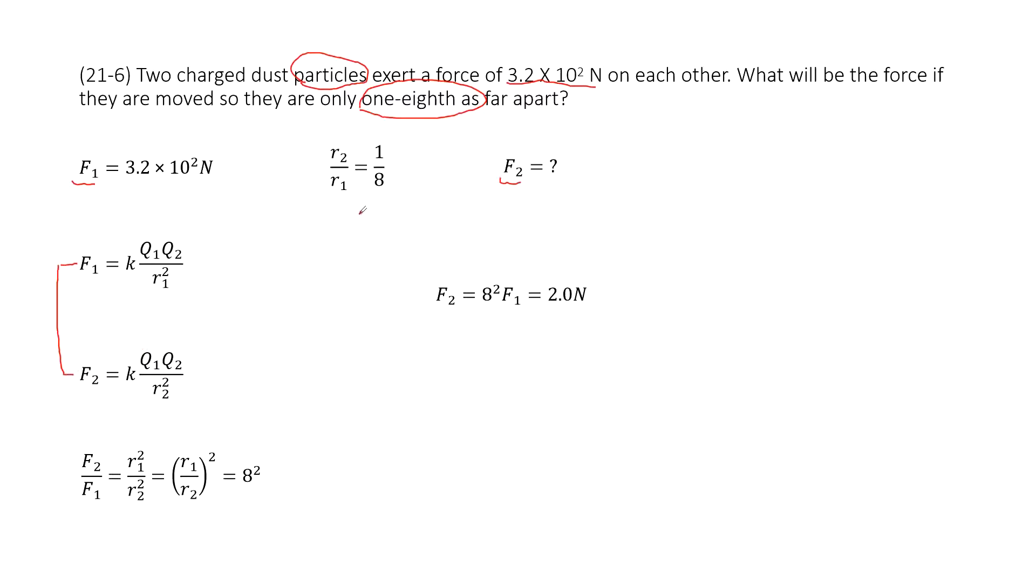But the only quantity given is about the ratio of the distance. So we can use F2 over F1. So using F2 divided by F1, we can see then we get this ratio.